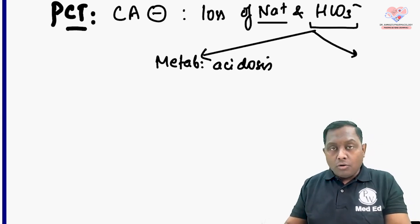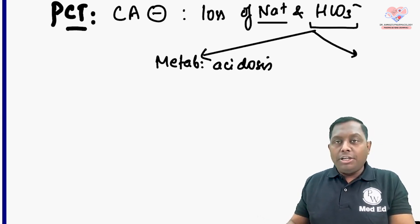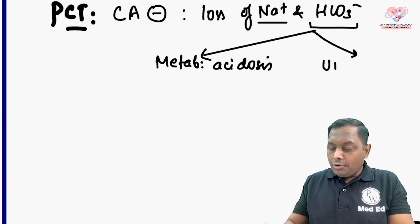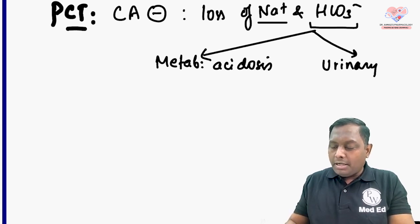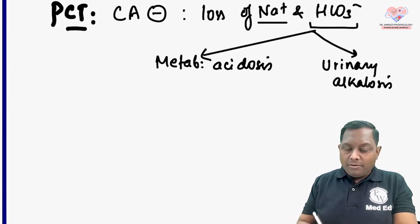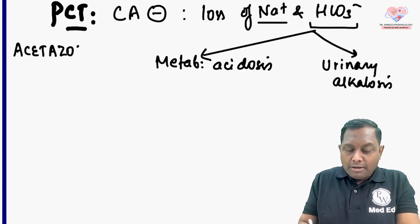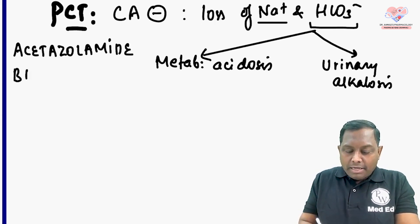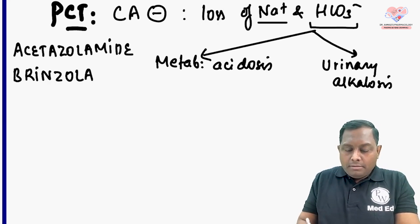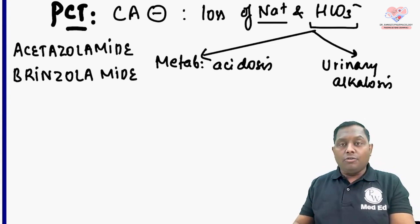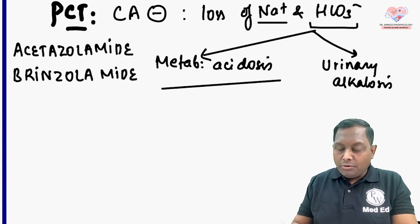Loss of bicarbonate leads to two important effects: inside the body, bicarbonate is lesser, causing metabolic acidosis; and in the urine, bicarbonate is more, causing urinary alkalosis. Drugs like acetazolamide, dorzolamide, and brinzolamide are all carbonic anhydrase inhibitors and they cause metabolic acidosis and urinary alkalosis.